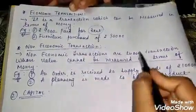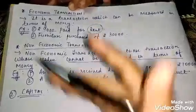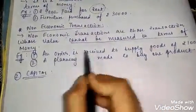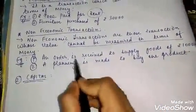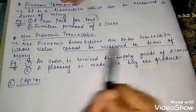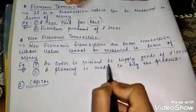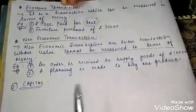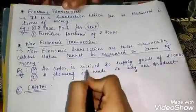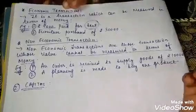For non-economic transactions, the value cannot be measured in terms of money. Example: 'An order is received to supply goods of 10,000.' I have only received an order to supply goods. No payment has arrived yet and no goods have been supplied yet.